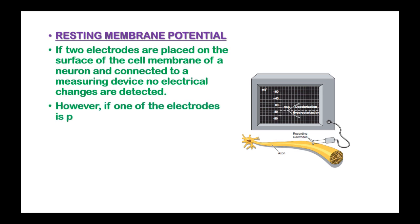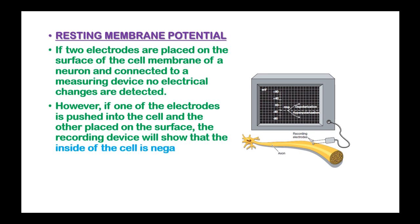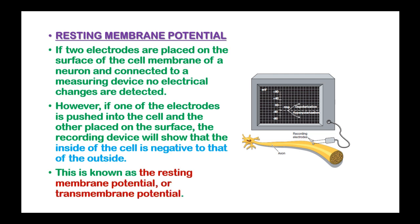However, if one of the electrodes is pushed into the cell and the other placed on the surface, the recording will show that the inside of the cell is negative to that of the outside. This is referred to as the resting membrane potential or the transmembrane potential.